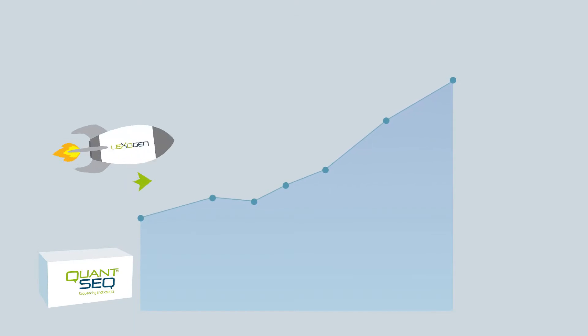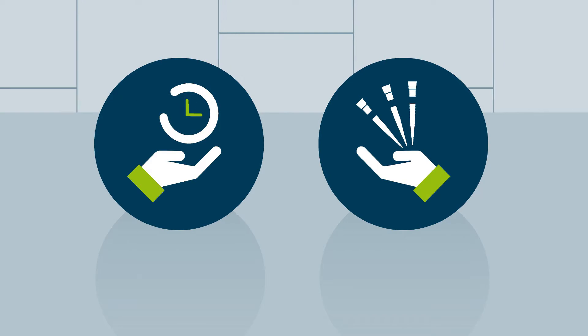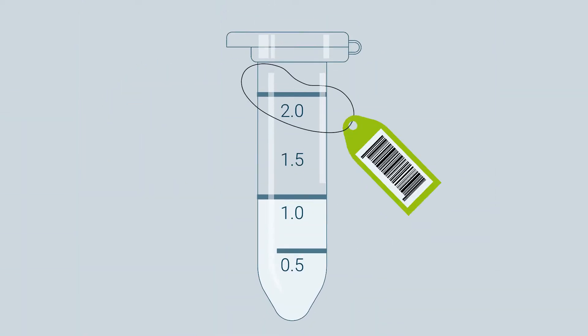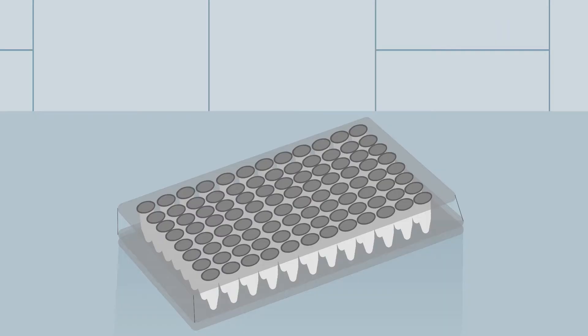With QuantSeq Pool you can easily scale up expression profiling projects and save significant time in consumables. In contrast to standard QuantSeq, up to 96 samples are labeled with a unique barcode in the first step.